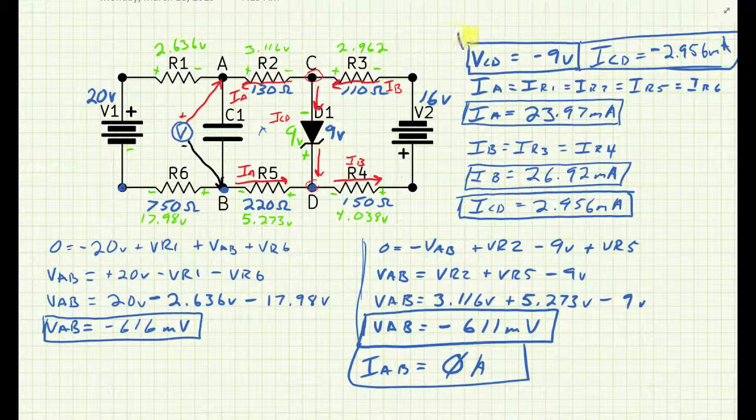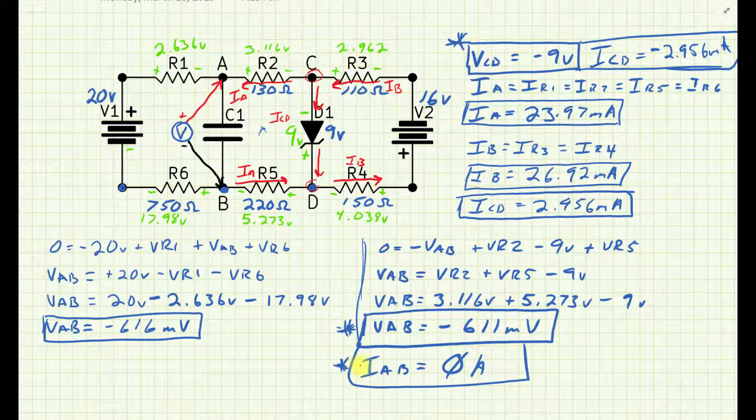So final answers for this circuit. I know my AB voltage to be minus 611 millivolts. My current is zero because it's a capacitor and that thing is going to be fully charged and therefore no current should flow. My VCD voltage is minus 9 volts because that diode had enough to cause Zener action to happen, or at least it's operating in the knee region and it is flowing current, holding on to that 9 volts.